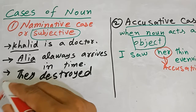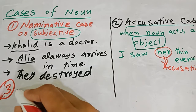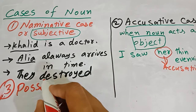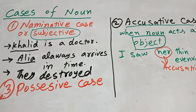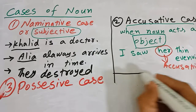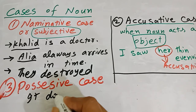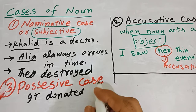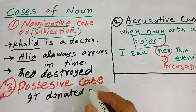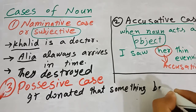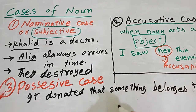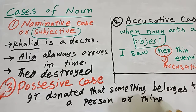The third case of noun is the possessive case. Possessive means having something. It is the case of noun or pronoun when it denotes that something belongs to a person or thing.